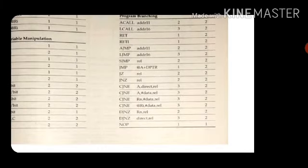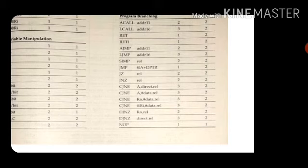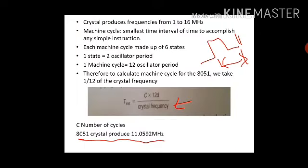If I say two machine cycles, it means in the equation T_instruction = C × 12 / crystal_frequency, C will be replaced by 2. The 12 cannot change, because one machine cycle equals 12 clocks.